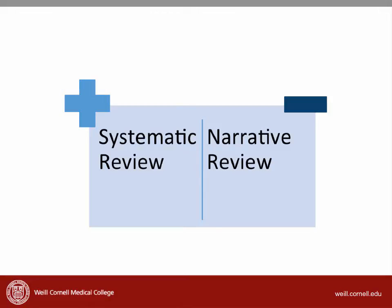A systematic review is different. The authors of a systematic review use standard methods to identify relevant articles, assess the quality of those articles, and report pooled results. Over the next few videos, we'll go over the methods of a systematic review and meta-analysis, and we'll learn how to interpret the results.